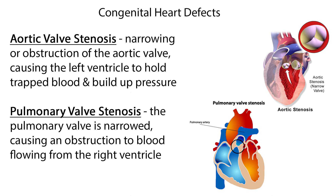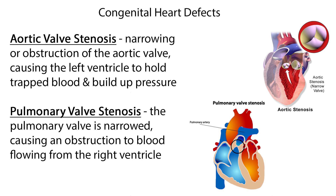Some common heart defects include aortic valve stenosis, which is narrowing or obstruction of the aortic valve, causing the left ventricle to hold trapped blood and build up pressure. Pulmonary valve stenosis is when the pulmonary valve is narrowed, causing an obstruction to blood flowing from the right ventricle.